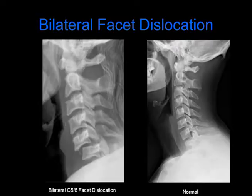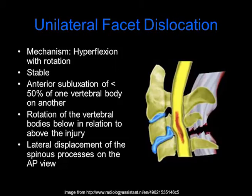On the right, we have a normal radiograph. You can also get a unilateral facet dislocation — the mechanism of this is hyperflexion with rotation. This is considered a stable injury. There is anterior subluxation of less than 50% of one vertebral body on another. You can see rotation of the vertebral bodies below in relation to above the injury, as well as lateral displacement of the spinous processes on the AP view.